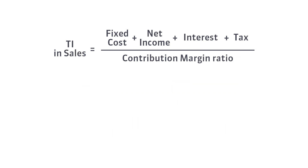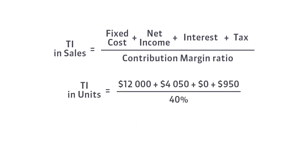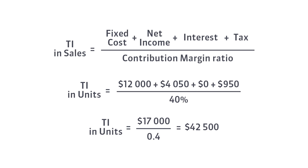Let's also calculate the value of the target income expressed as a sales value. As you can see, the value of sales needed to reach the assumed target net income is the same as in the case of operating income, provided that interest and tax are added. Time for some conclusions.